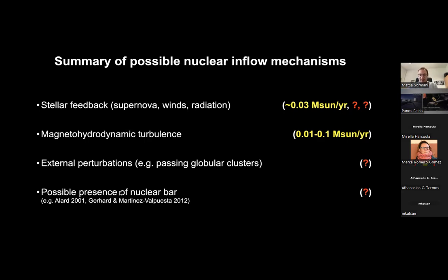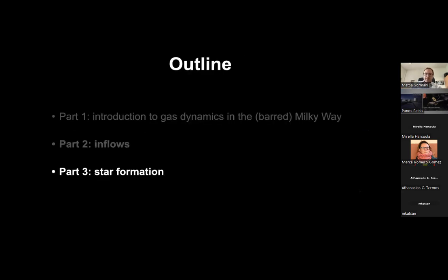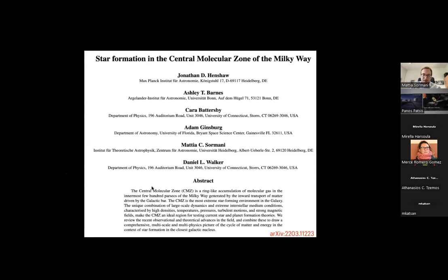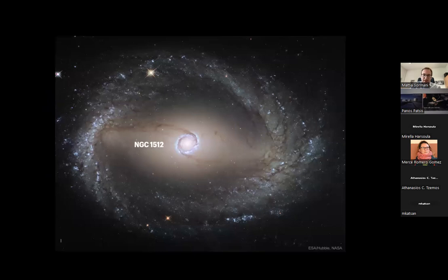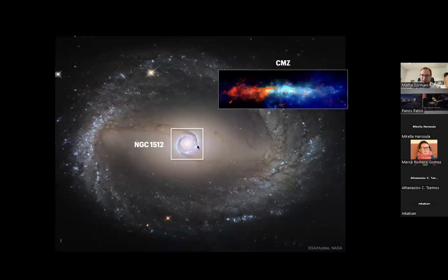If there is a secondary bar, everything would be different — you could repeat on a smaller scale in the center what the large-scale bar does on large scales. Moving to the final part on star formation: I want to advertise our recent review, Henshaw et al., for the Protostars and Planets VII conference. Here is the CMZ as a three-color image — red is cold gas and dust, green and blue is warm dust heated by young stars. The idea is that the CMZ is a nuclear ring seen edge-on because we live inside the galaxy.